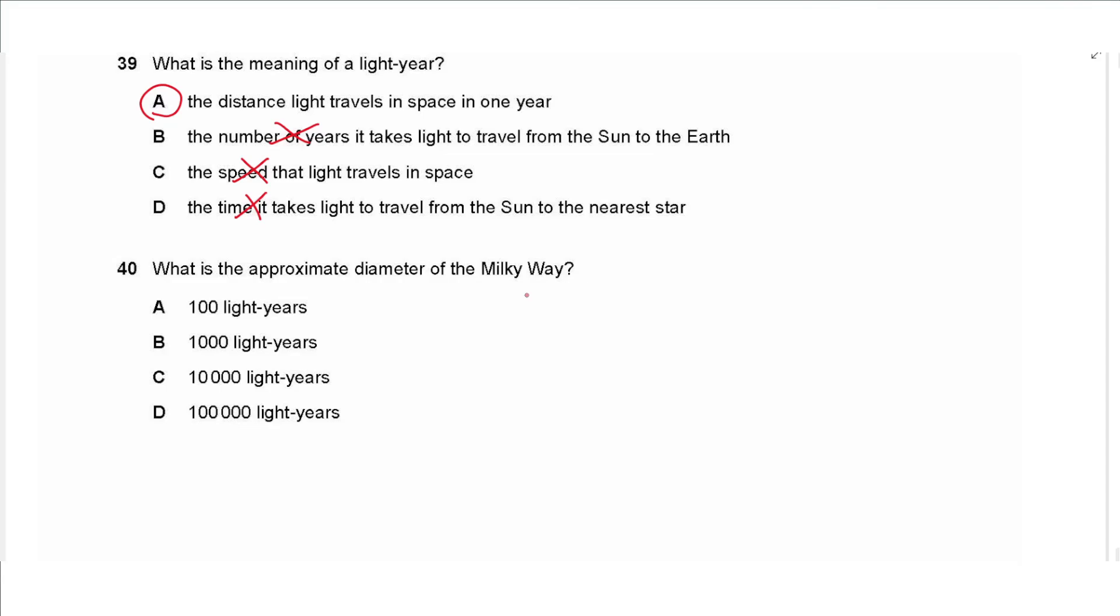Question 40 says what is the approximate diameter of the Milky Way. That's a galaxy which contains hundreds of billions of stars, and the nearest star from our solar system is about five light years away. So we need a very large distance for the whole galaxy, so we choose the largest distance, so we choose D.